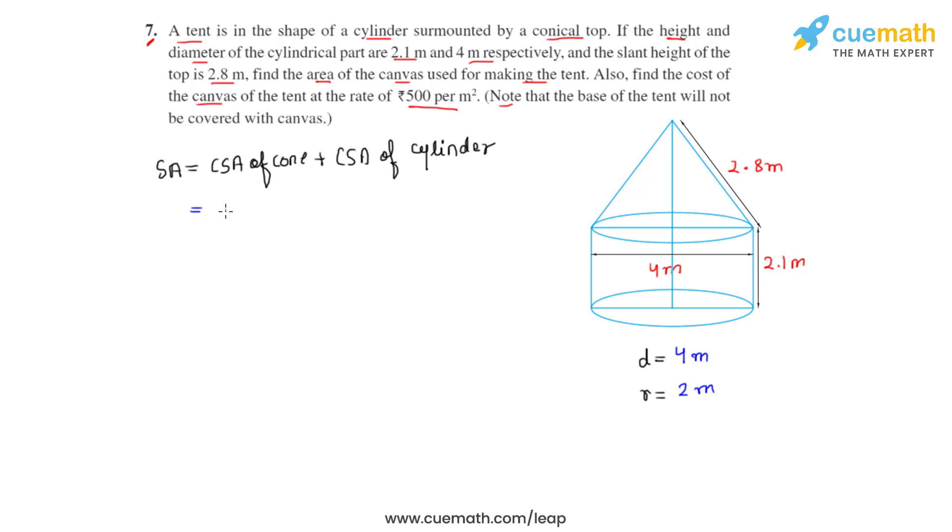The curved surface area of cone can be found by making use of the formula πrL, and the curved surface area of cylinder is 2πrh. We can take πr common, and we will be left with L plus 2h inside the brackets.